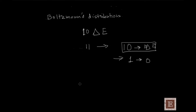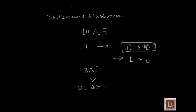In our numerical argument we will consider a very simple system with only four particles, and we designate the total energy of the system to be just 3δe, where δe is a small energy value. The particles can only acquire energy in chunks of δe — so the energy is not continuous. Particles can have energy of zero, δe, 2δe, or 3δe.